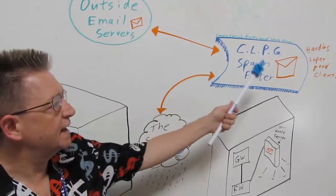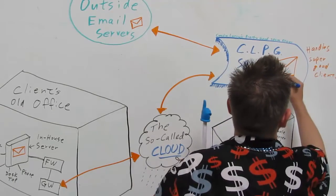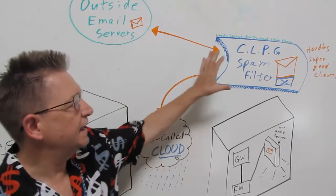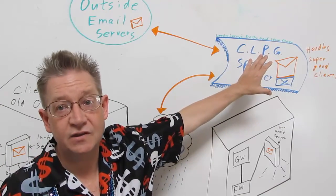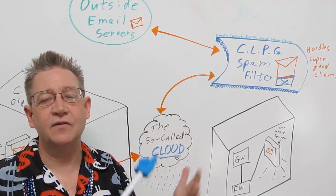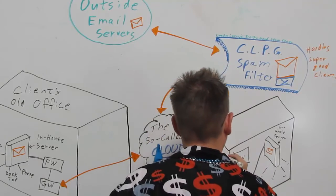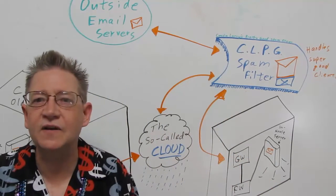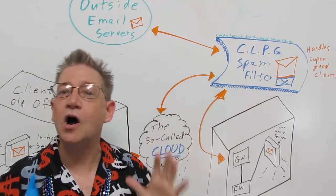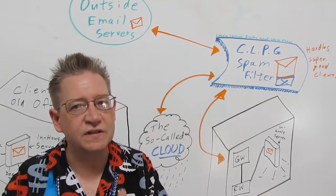Step one is you're going to set up a configuration file at Cousin Larry's pretty good spam filter. That configuration file tells it that it can send email and forward it to a new address. So you're going to say the new address is whatever the new IP address is at the new office. Even if the office doesn't exist yet, the IP address exists and it knows that it can send email to that. Automatically, it will not error out if it can't reach it — it's just going to hold the email. That's all it does, which is a beautiful thing.